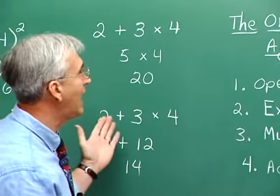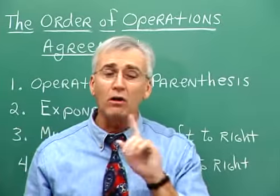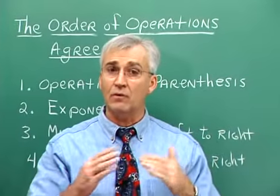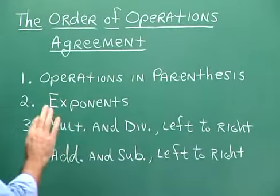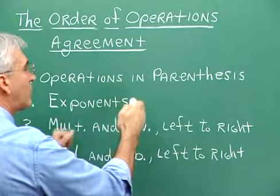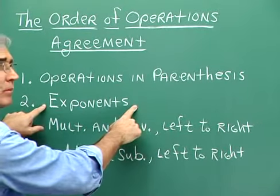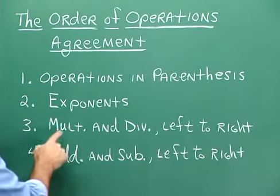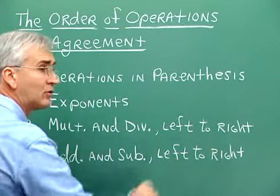It is for that reason that we have what's called an order of operations agreement — and because we're all involved in math, we all agree to this agreement. We perform operations in parentheses first. Next, we look for exponents. After that, we perform multiplications and divisions from left to right. And after that, we perform addition and subtraction from left to right.